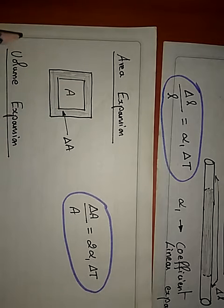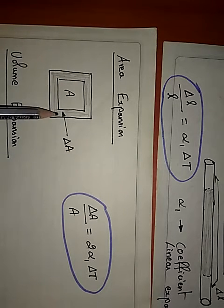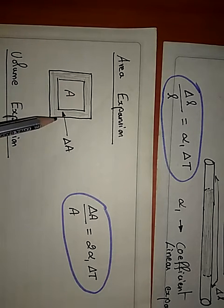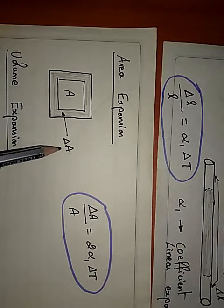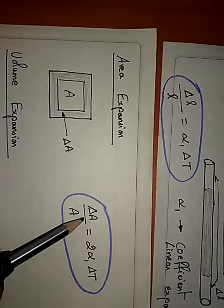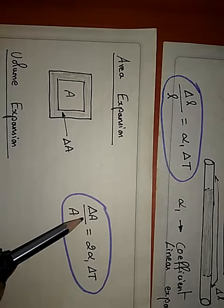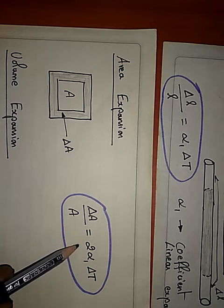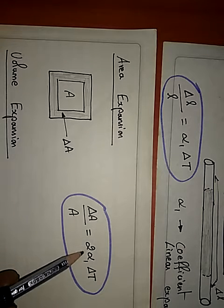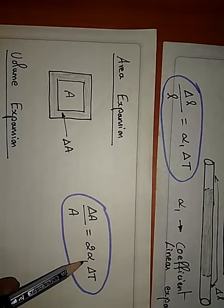This is the actual area. Because of heating of this substance, the area has been increased. The change in the area is del A. Therefore, change in the area by original area, that is A, is equal to twice alpha 1 into del T.